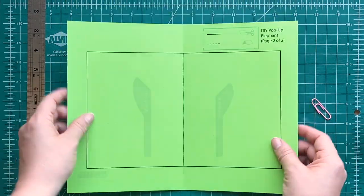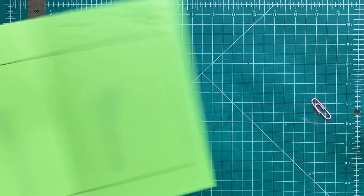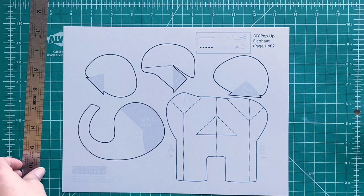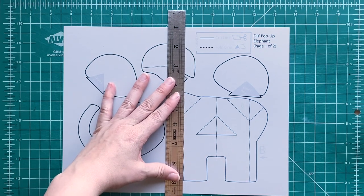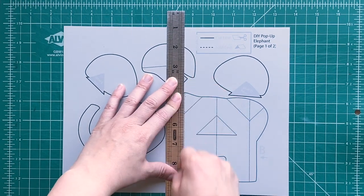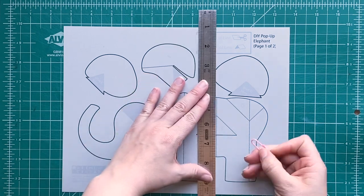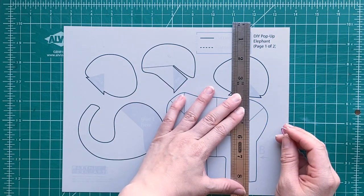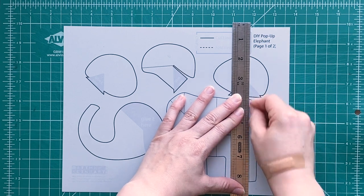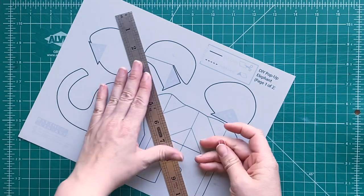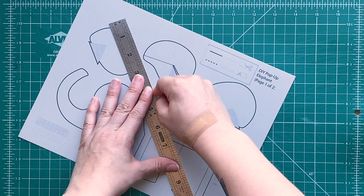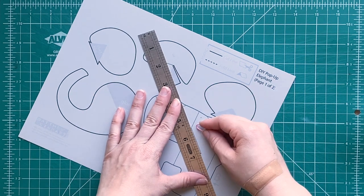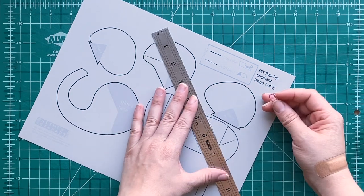So we're gonna use a ruler and a large paper clip and we're gonna rub the paper clip along each of the dotted lines using our ruler to keep our lines straight. The reason why we're scoring all those dotted lines is it helps make the folds work a lot better. So they'll fold a lot easier and your paper will know where to fold.